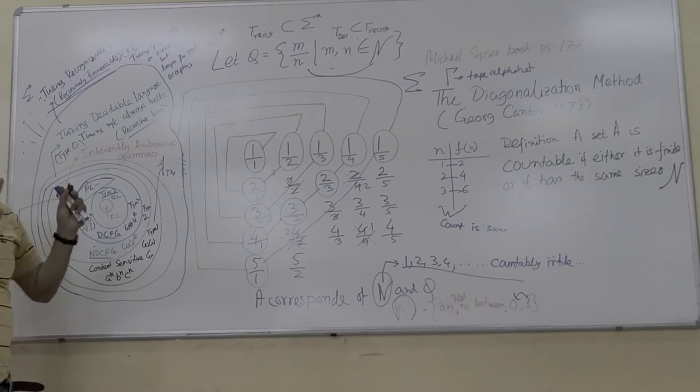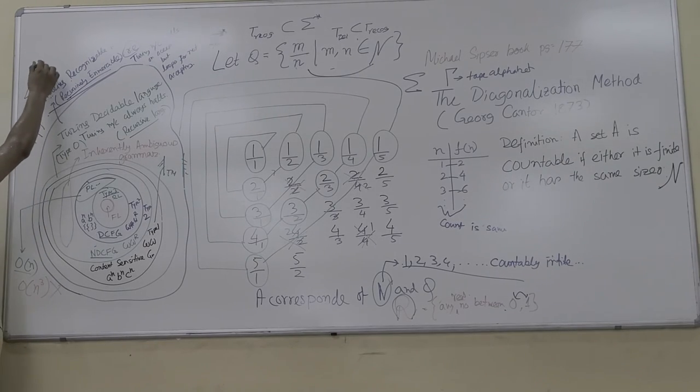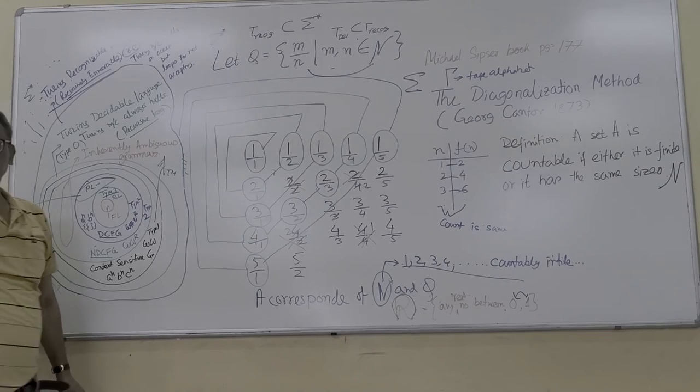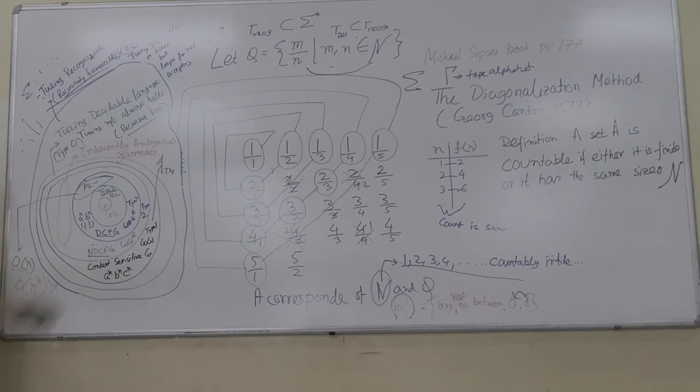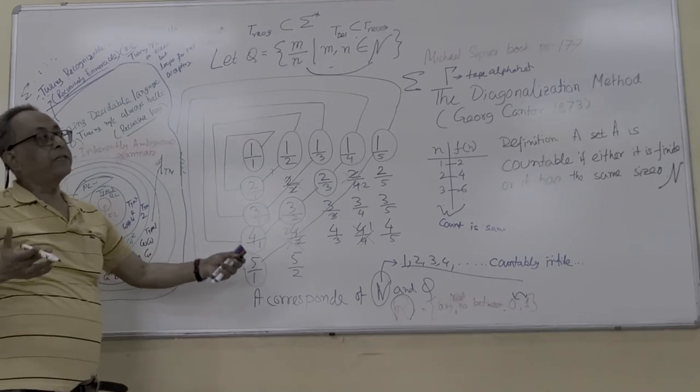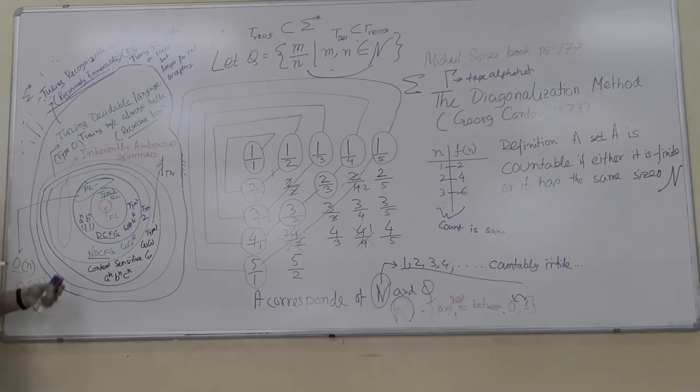That is from Automata class you can take it there. In Automata class you also know there are some undecidable problems like halting problem, Post correspondence problem, zigzag problem, whether context-free language, whether context-free grammar same or not, ambiguous or not, same grammar. These are the seven problems.